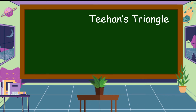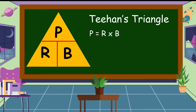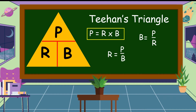We use the T-Hence triangle, divided into three parts. On top is P, which stands for percentage. R stands for rate, and B stands for base. Our formula for finding the percentage is rate times base. To find the rate, the formula is percentage divided by base. And for base, the formula is percentage divided by rate. These are the three important formulas we'll use in this lesson.